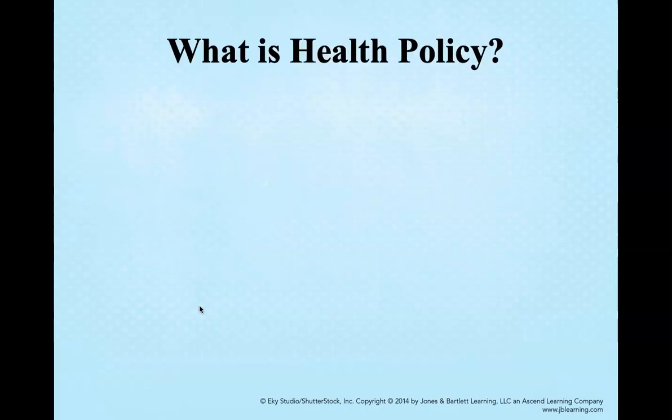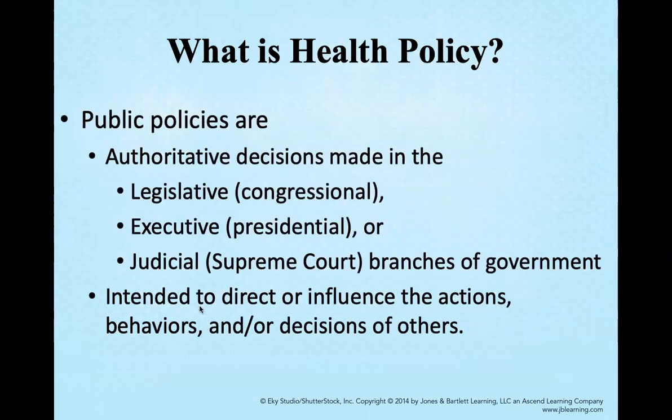First, let's talk about health policy. Health policies cannot be created without first creating public policies, so let's revert back to public policies. Public policies are authoritative decisions made by three branches of the government. The first branch is the legislative branch, also known as the congressional branch, which includes the two houses of Congress in Washington and is responsible for making the laws of the land. There will be a more expanded discussion of the legislative body's role towards the end of the lesson.